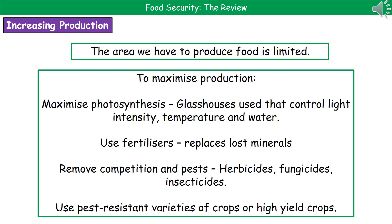We can remove competition and pests using chemicals such as herbicides, fungicides, and insecticides to eliminate key elements that could affect crop growth. We could also grow pest-resistant varieties of crops, or crops that are naturally high-yield producing ones.